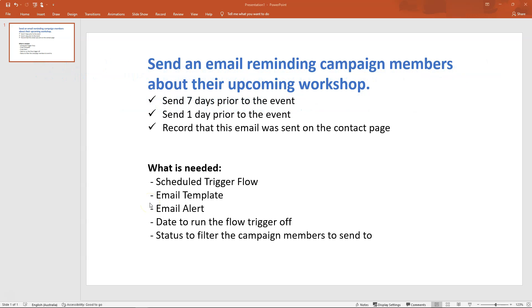Hi everyone, thank you for tuning in to Pace Yourself. Today we're going to be talking about a scheduled trigger flow and how to create one that sends emails to a campaign member about their upcoming workshop. The use cases on our screen: send an email reminding campaign members about their upcoming workshop. We have three things we have to make sure we get done — send it seven days prior to the event, send it one day prior to the event, and make sure it's recorded on that contact page that the email was sent.